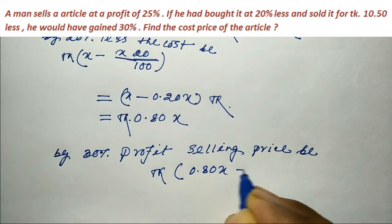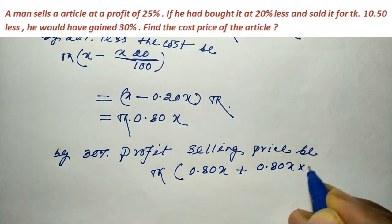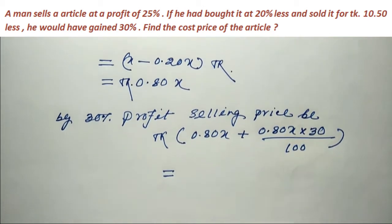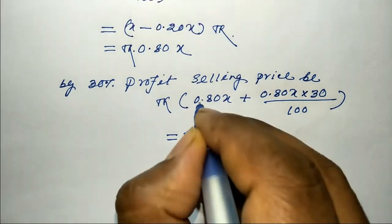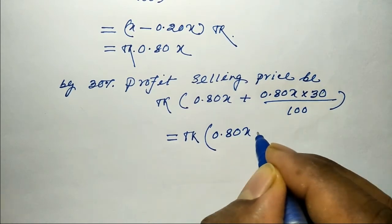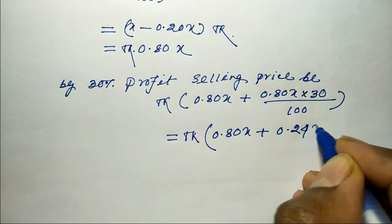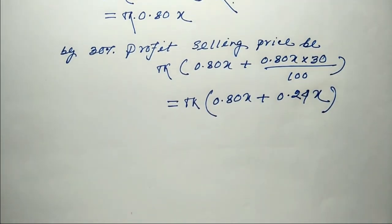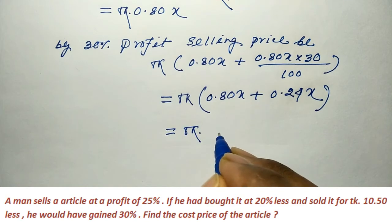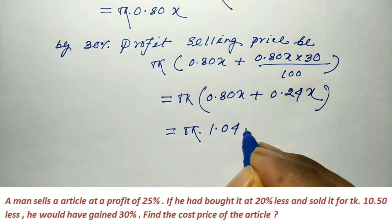The selling price with 30% gain on the discounted cost price is: 0.80X plus 0.80X into 30 by 100. Calculating: 0.80X plus 0.24X equals 1.04X taka.